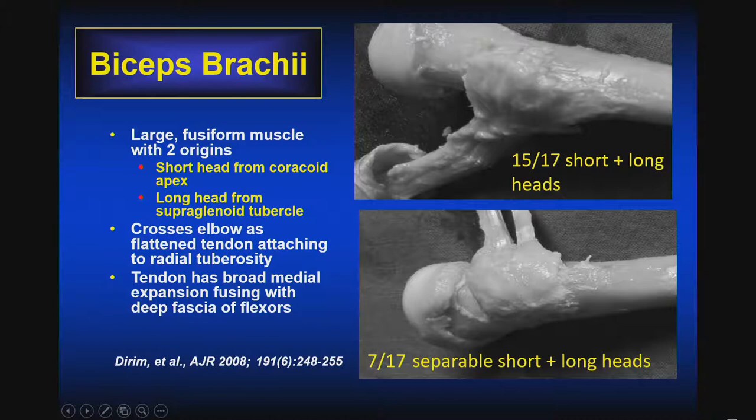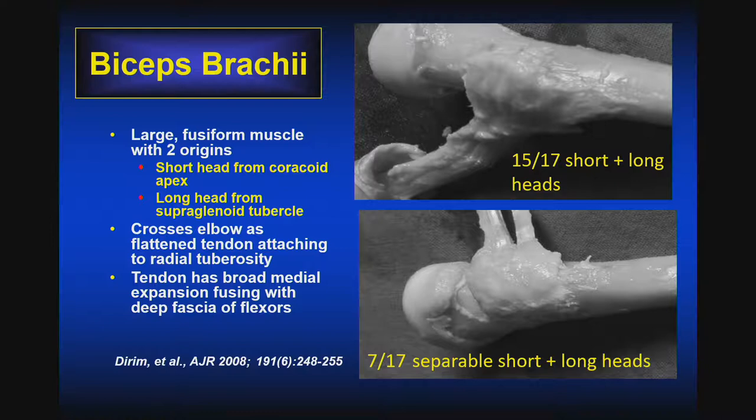So let's jump right in and begin our discussion with the biceps brachii. We consider our evaluation of the biceps from the top — the proximal biceps, intra-articular at the level of the shoulder, attaching at the supraglenoid tubercle — traversing the length of the humerus, and as we move towards the distal attachment, distal to the articular surface of the elbow, the two fusiform muscles come together to form a single tendon towards the distal attachment at the radial tuberosity.